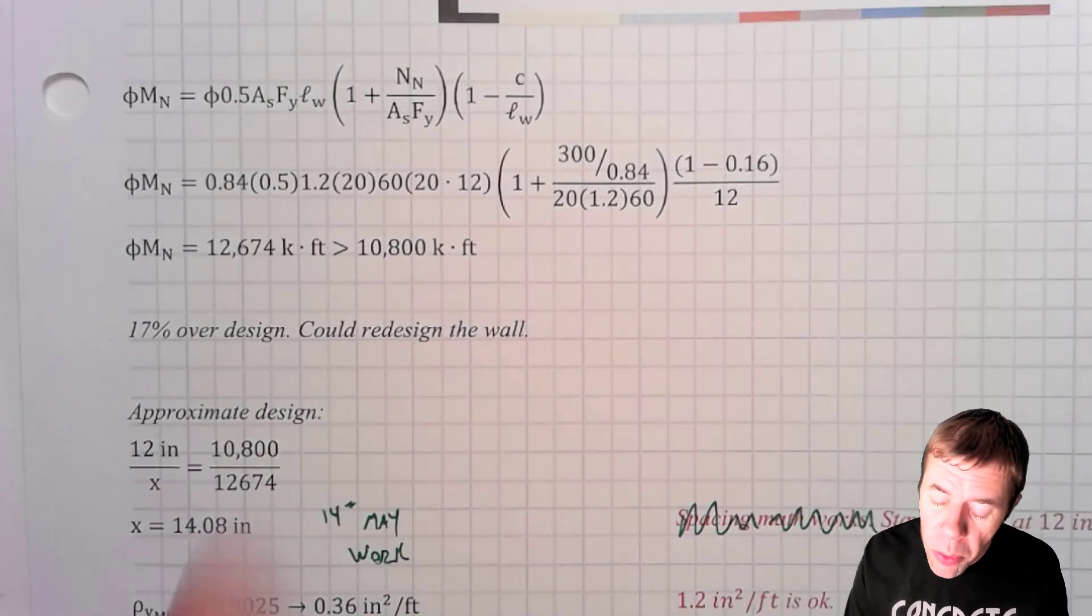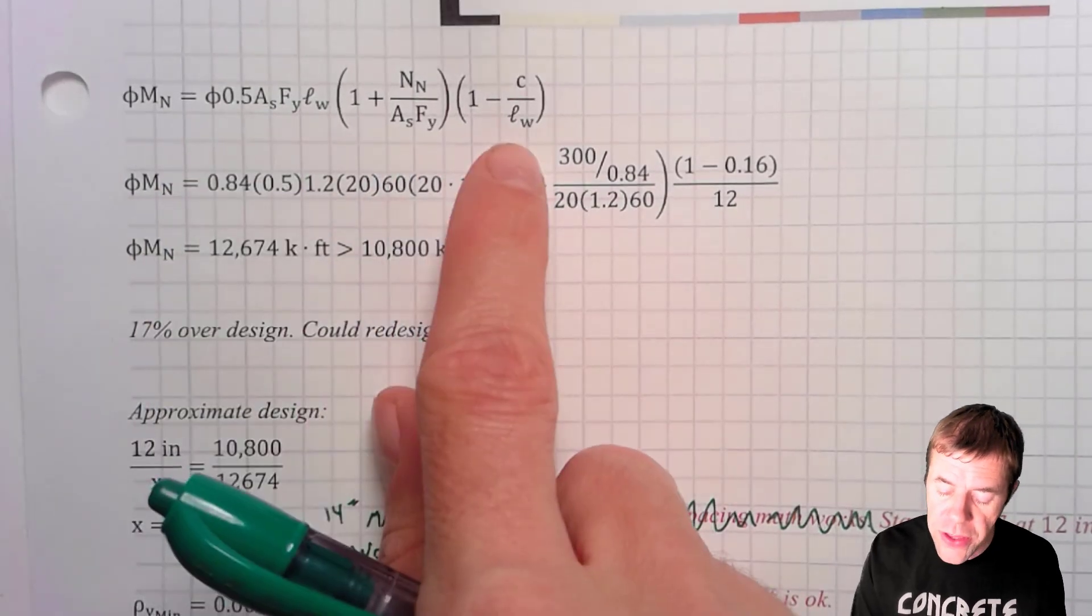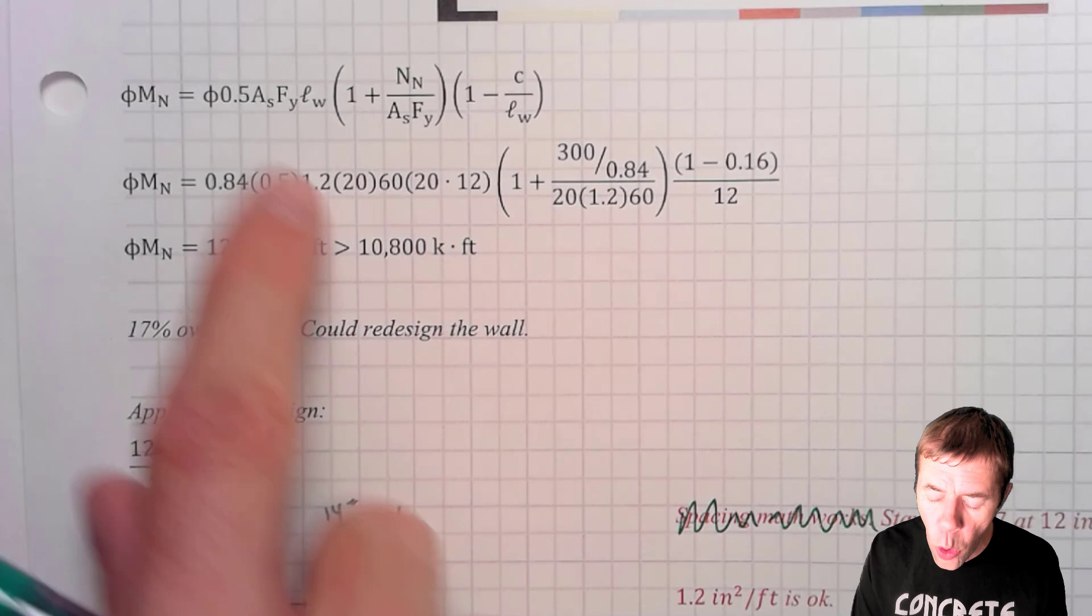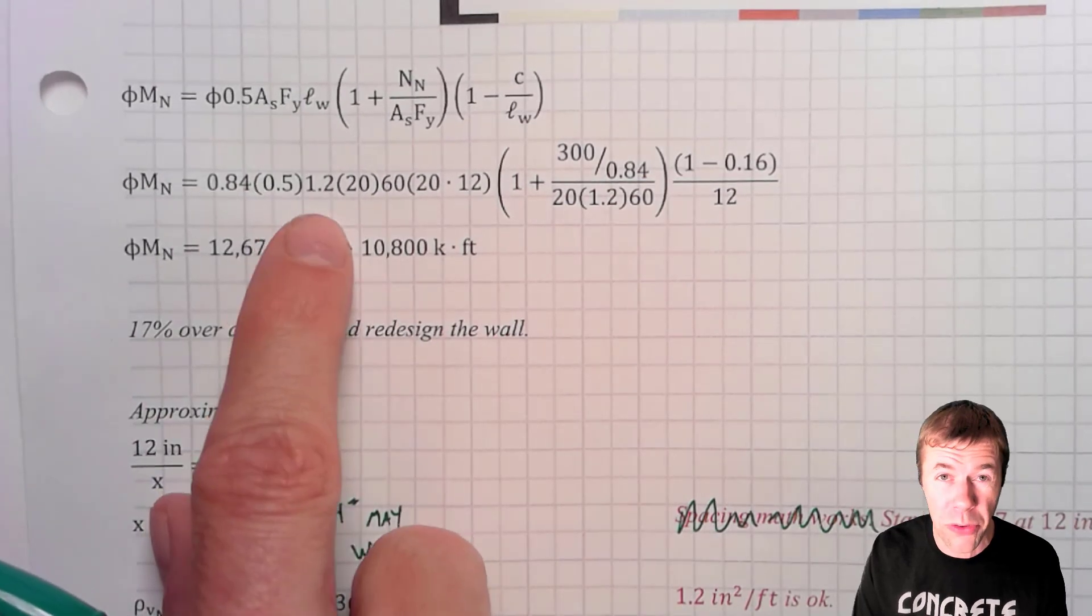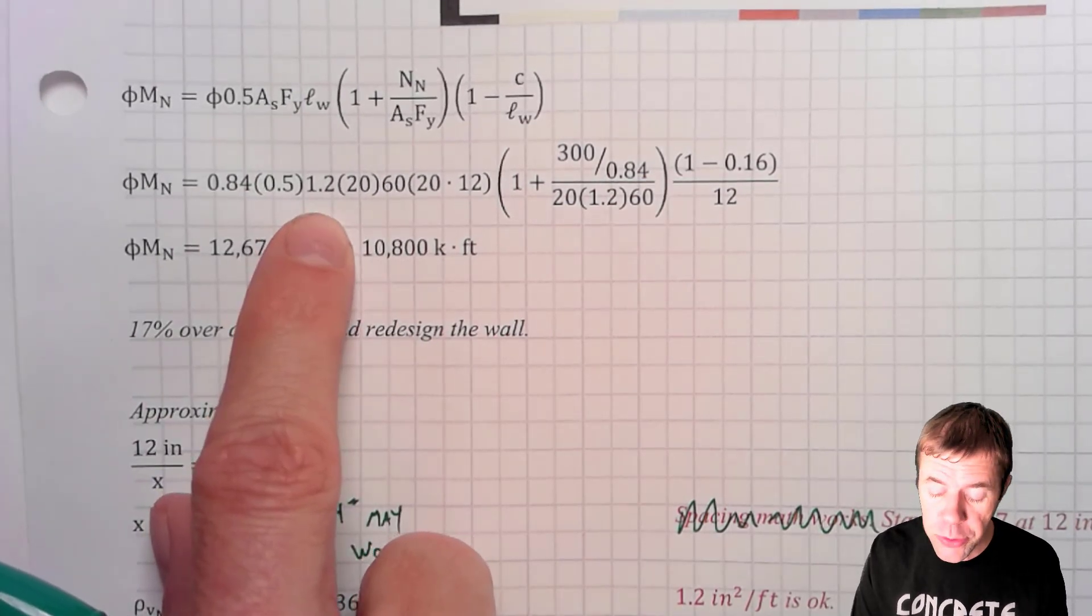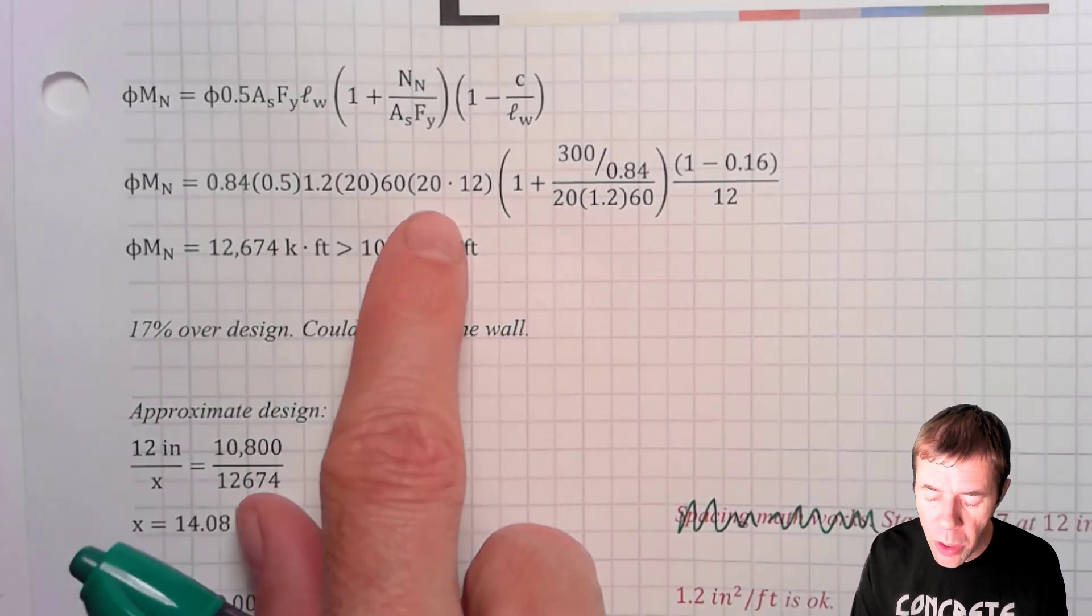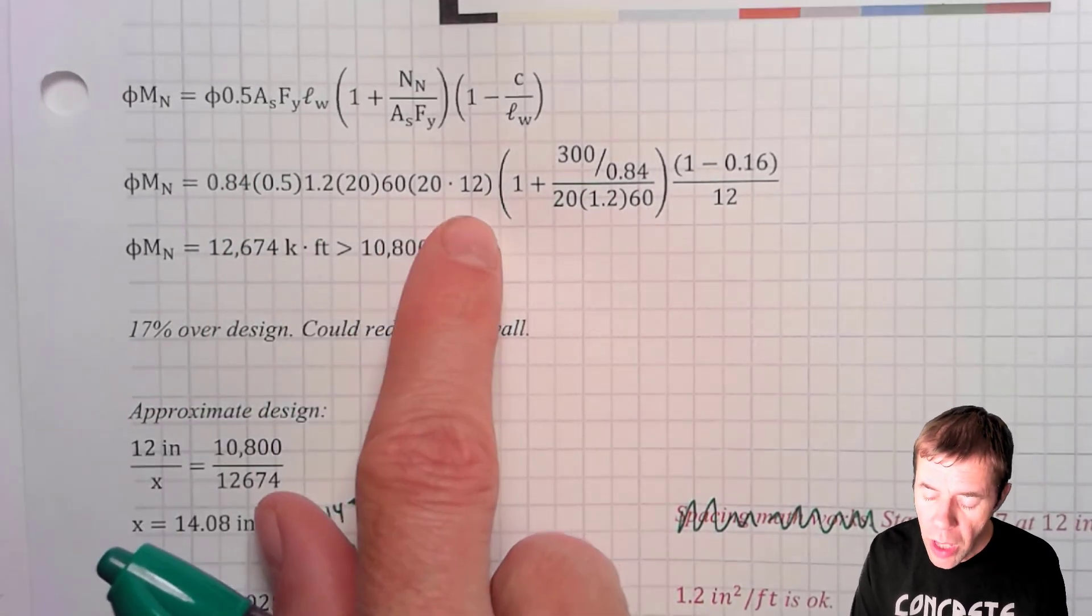So I've been calculating all of this to plug into this equation. This is my phi factor. Here's my 0.5. Here's my area of steel over my length of my wall. Remember, it was 1.2 inches squared per foot times 20 feet. This is 60 ksi. Again, my lw length of my wall is 20 times 12.